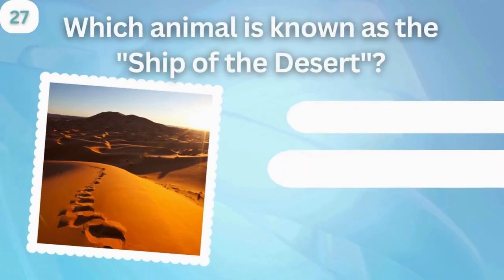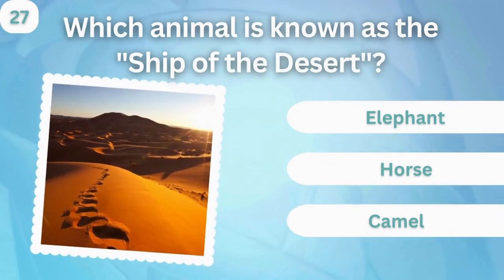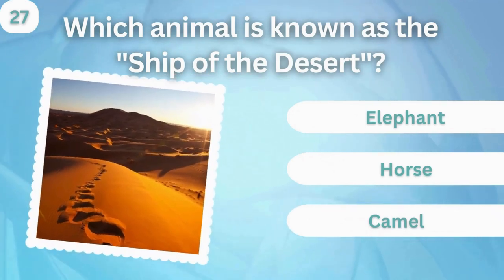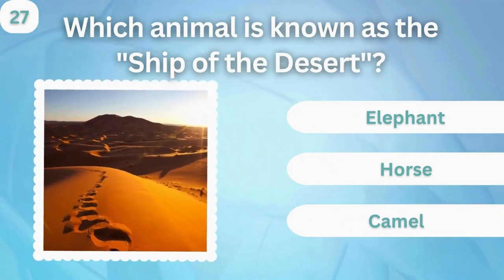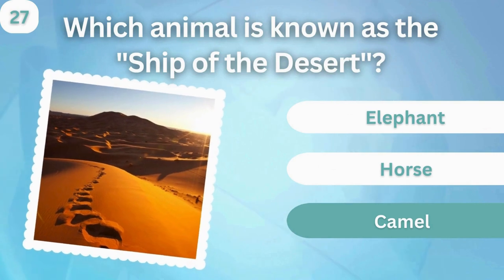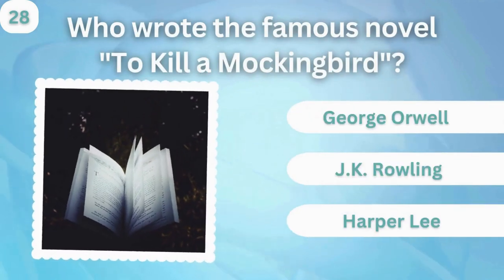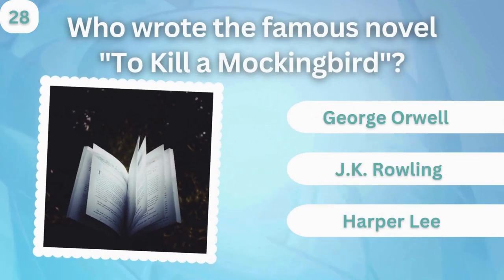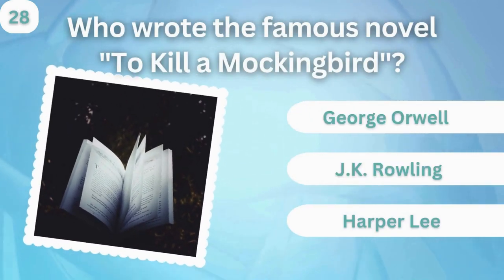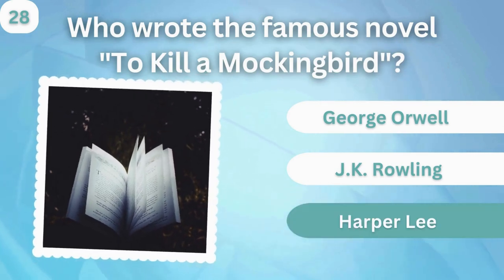Which animal is known as the ship of the desert? Elephant, horse, or camel? Camel. Who wrote the famous novel To Kill a Mockingbird? George Orwell, J.K. Rowling, or Harper Lee? Harper Lee.